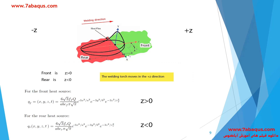In this picture, the location of front and rear has been distinguished in the Goldak double ellipsoid model, where front is marked in green and rear in red. If the welding torch moves to the right, the right side is front and the left side is rear. Front corresponds to z greater than zero and rear to z less than zero. Front and rear are dependent on the direction the welding torch moves. In this picture, you can observe the formulas written for front and rear.